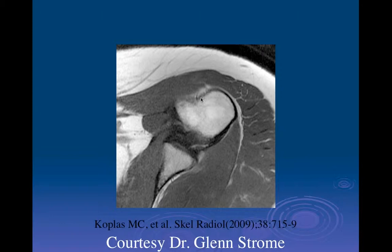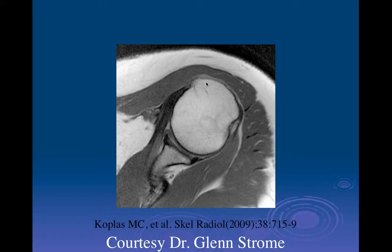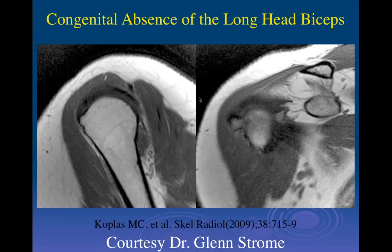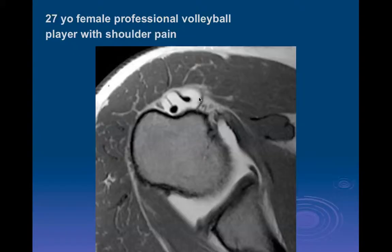There are occasional variations in anatomy. Here we can see a very unusual groove and no biceps tendon in that location. Following it up, there's still no tendon, and where there should be a nice intertuberous groove, there's no groove at all. On other planes we see the same thing — this is a very rare congenital absence of the long head of the biceps tendon, in which case the groove doesn't develop because it requires the biceps to be present for normal development of the bicipital groove.